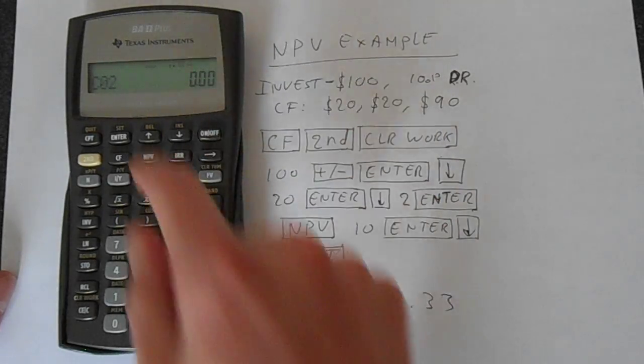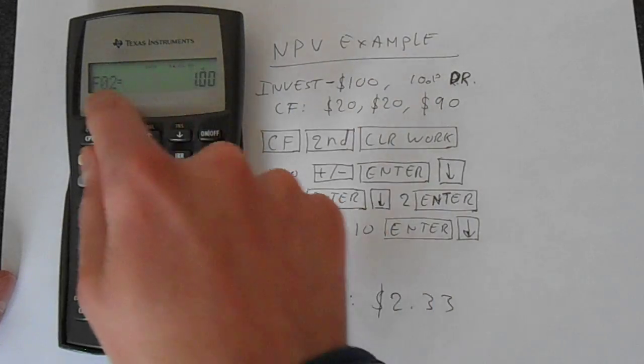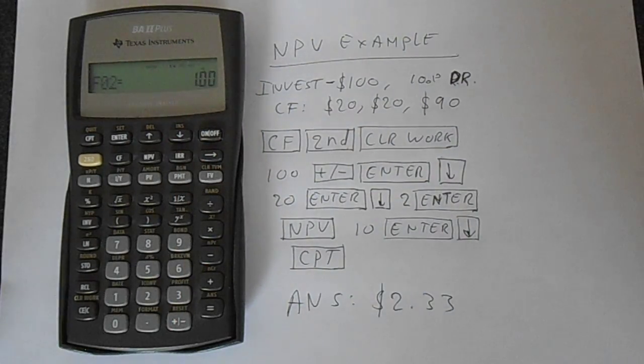Let's move down once more. The next cash flow is $90, so 90, enter, and then down. The frequency is automatically set as 1—we'll just leave that alone.